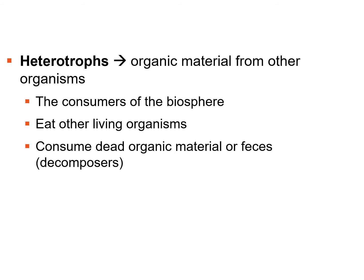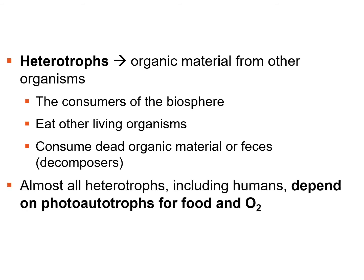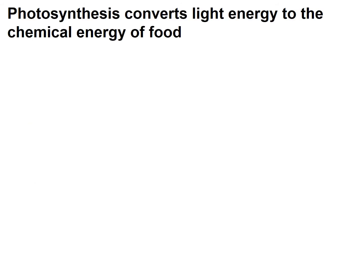Some heterotrophs consume dead organic material or feces — these are specifically called decomposers. Almost all heterotrophs, including us, depend on the photoautotrophs for food and oxygen. It's actually algae, not plants, that produce the majority of oxygen in the biosphere — algae are a group of protists and the main producers of oxygen.